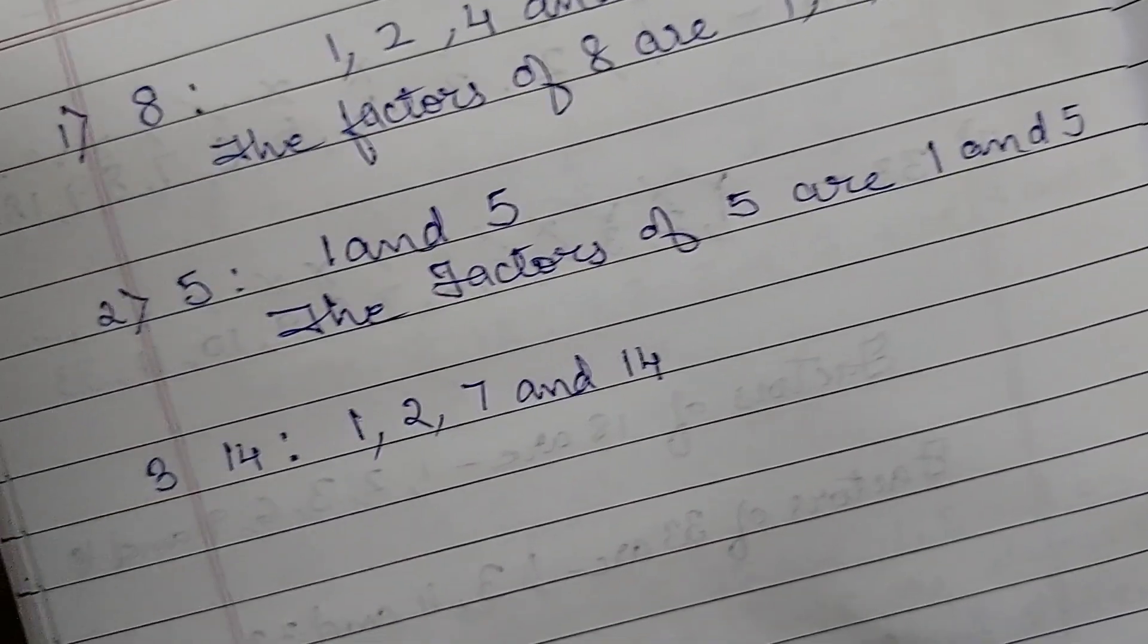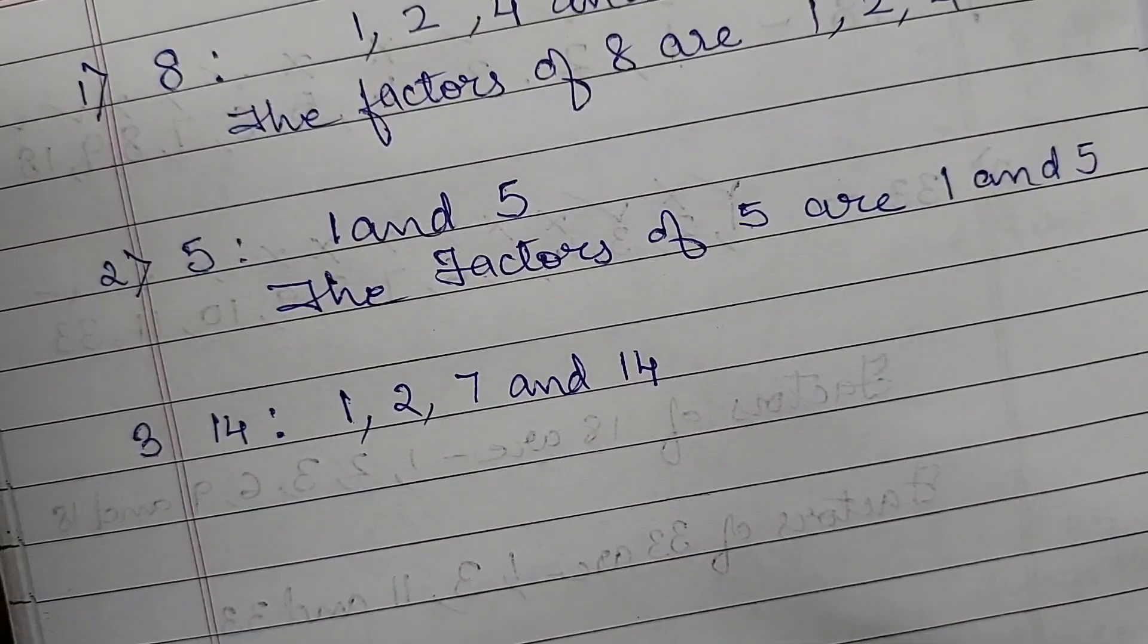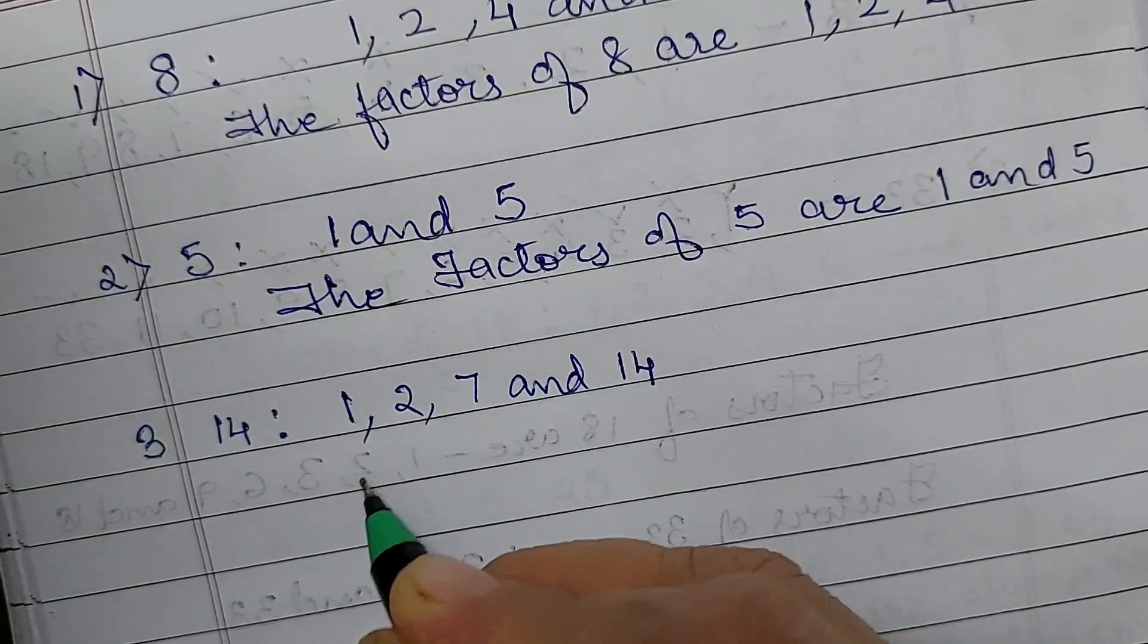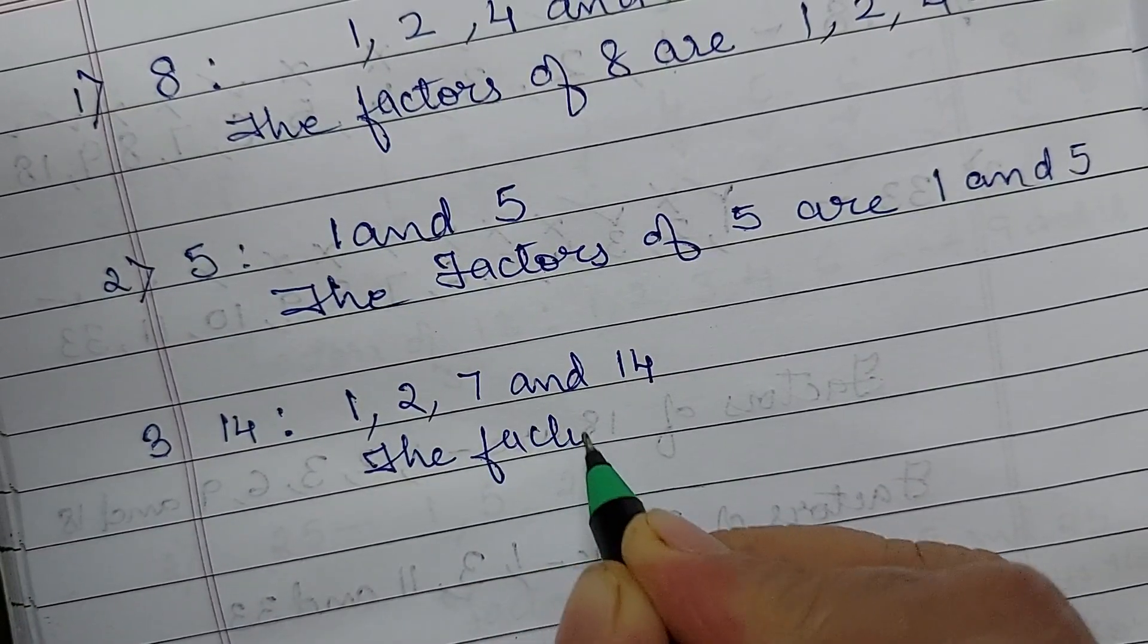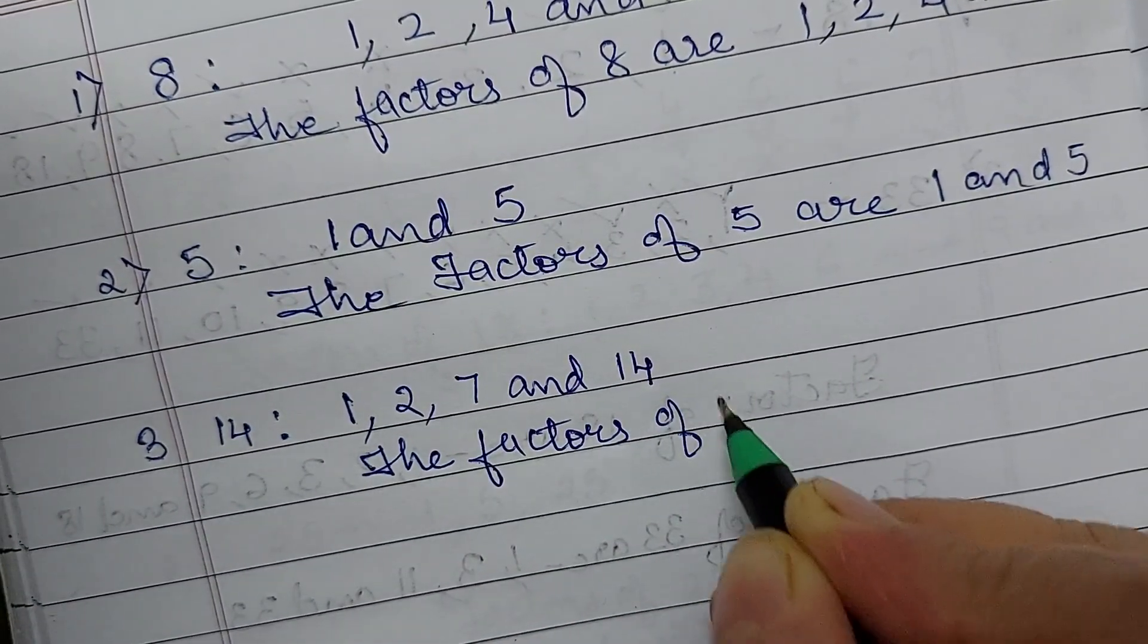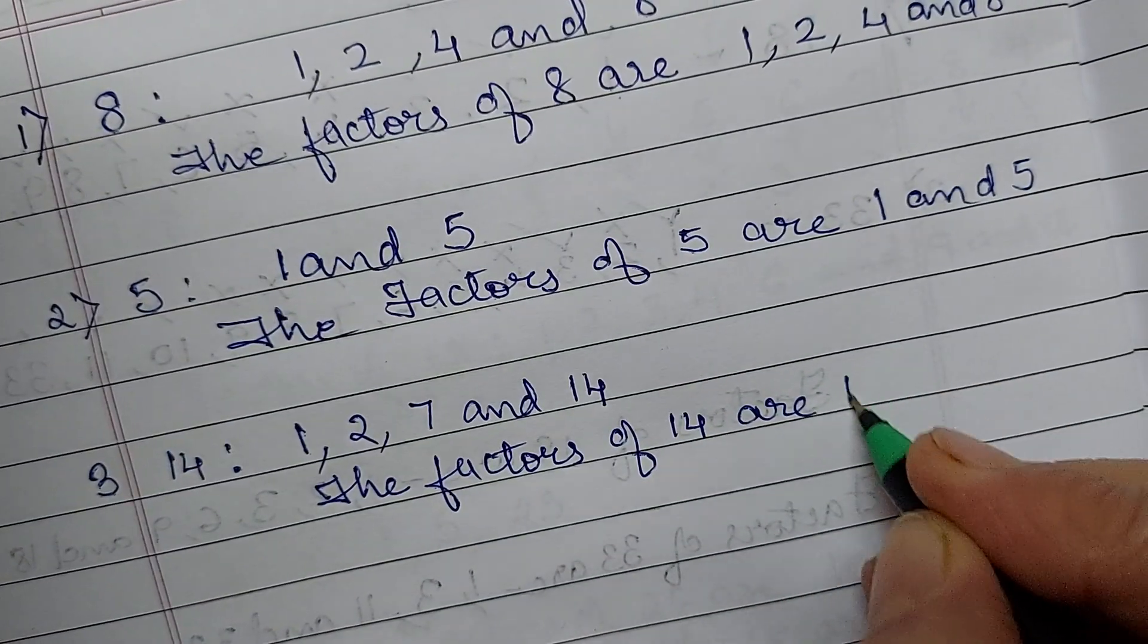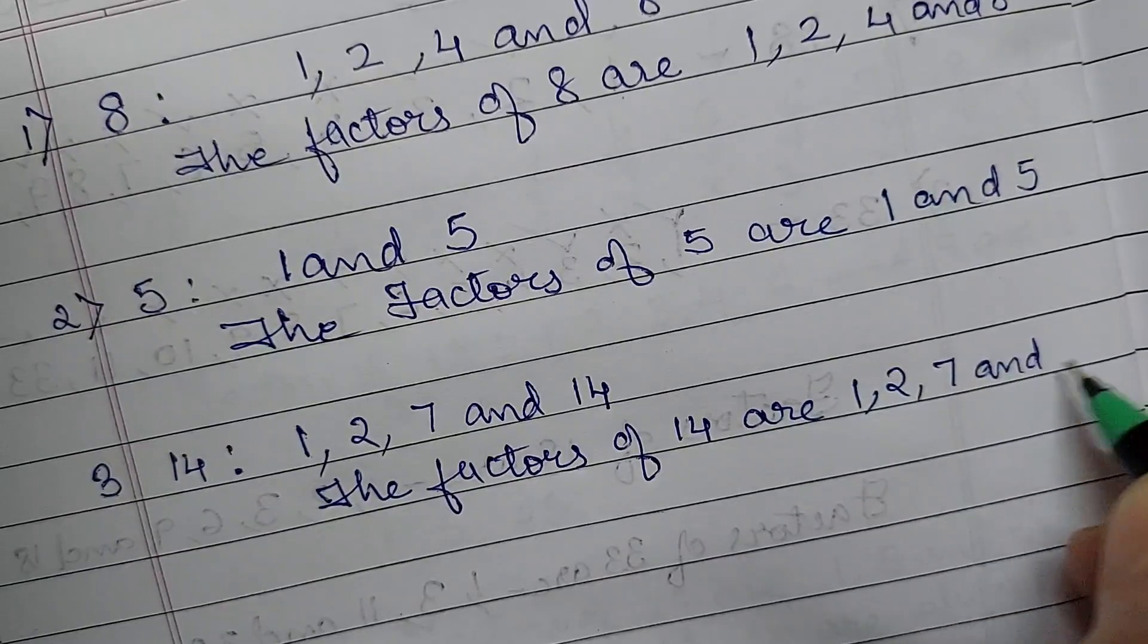Understood children. So for this you need to learn the tables. If you learn the tables, if you know the tables well, it will hardly take some seconds, a few seconds to write. So we have to write the factors of 14 are 1, 2, 7 and 14.